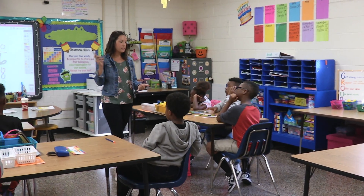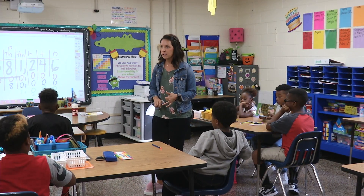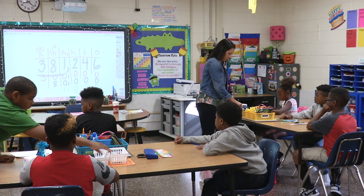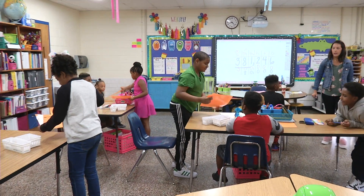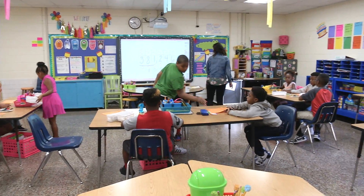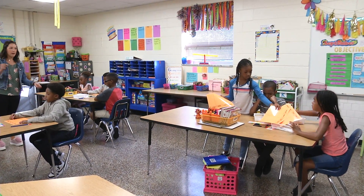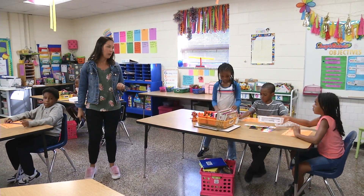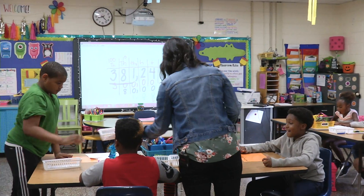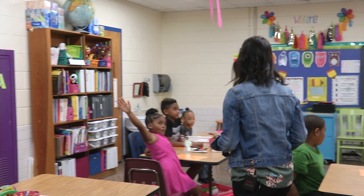So we talked about standard form, we talked about expanded form. Today we're going to be talking about picture form. On your table there are some place value mats. Table captains, can you make sure everybody gets one place value mat? You guys may pass out the baskets. Separate the baskets — you should have four baskets for each of our place value blocks. You guys are going to work together and share all of your blocks. I'm going to write a number on the board and you guys are going to have to build it.